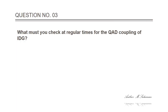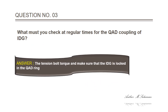Question 3: What must you check at regular times for the QAD coupling of IDG? Answer: The tension bolt arc, and make sure that the IDG is locked in the QAD ring.